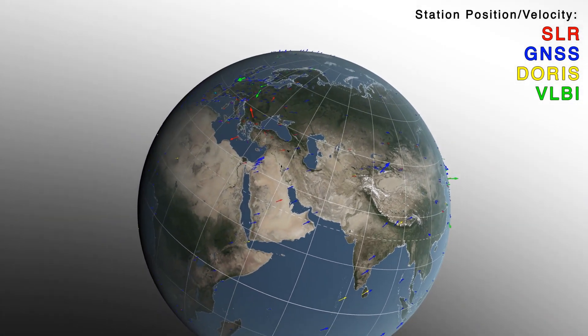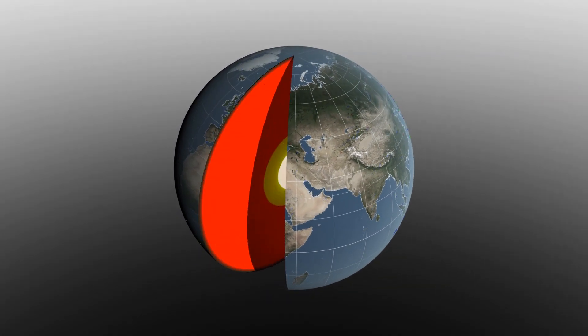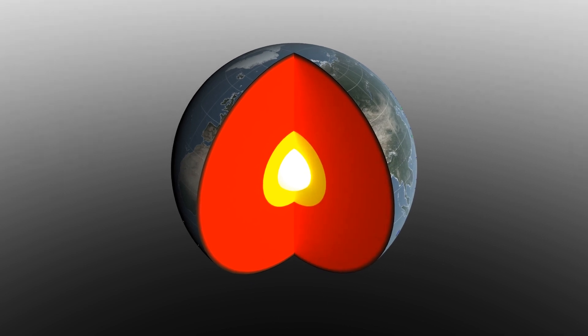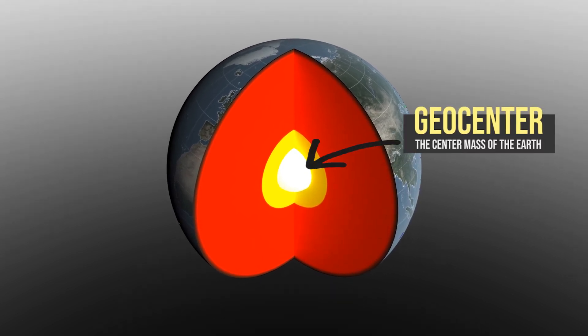And just like a coordinate system plotted on a piece of paper, the TRF has an origin, or in this case, the center mass of the Earth called the geocenter.